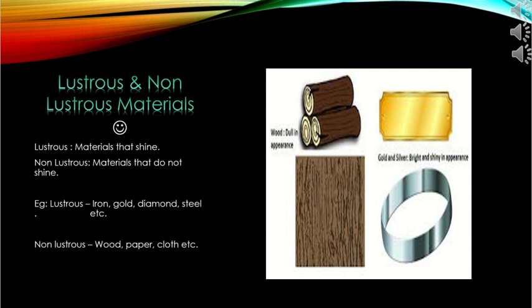You are right — the same gold and diamonds which everyone likes to wear. These materials have a lustrous property which makes them shine. For example, wood is different from iron, and iron is different from wood in many ways.